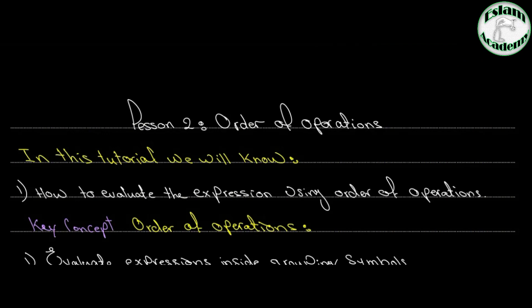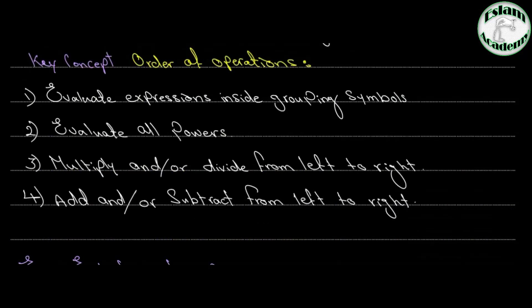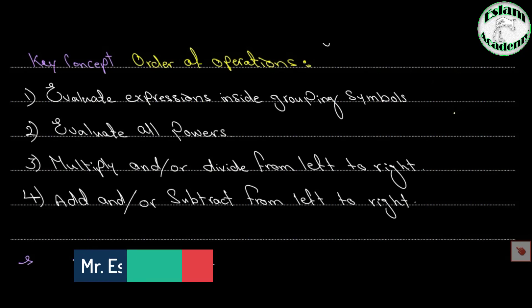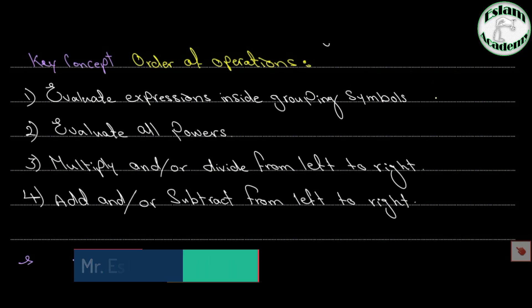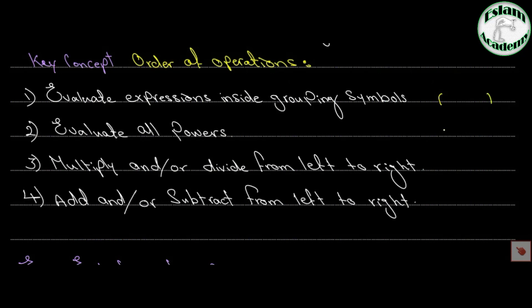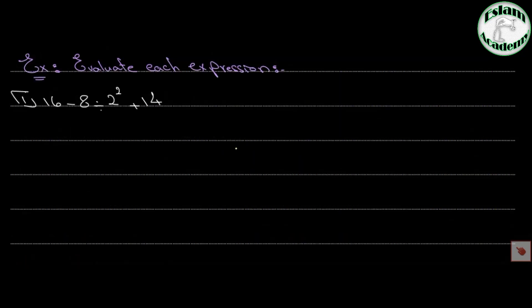In this tutorial we will learn how to evaluate expressions using order of operations. The key concept: order of operations means that when a question contains more than one operation, we follow a specific sequence. First, evaluate expressions inside grouping symbols (brackets). Then find the power. Then solve multiplication or division from left to right. Finally, solve addition and subtraction.